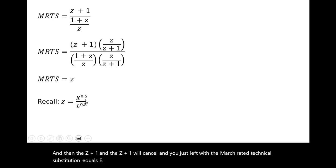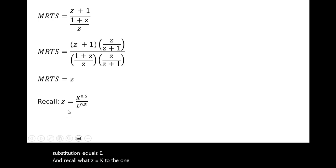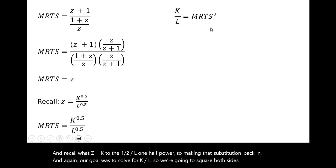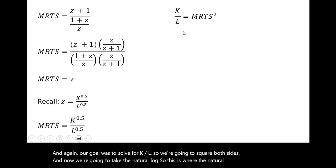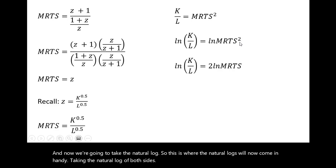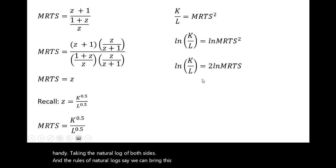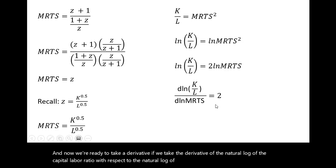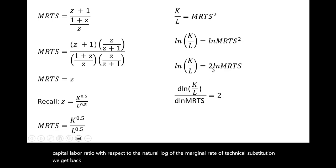And recall what z equals: k to the 1 half divided by l to the 1 half power, so making that substitution back in. And again, our goal was to solve for k divided by l, so we're going to square both sides. And now we're going to take the natural log of both sides. The rules of natural log say we can bring this 2 down in front. And now we're ready to take a derivative. If we take the derivative of the natural log of the capital labor ratio with respect to the natural log of the marginal rate of technical substitution, we get back 2 — simply the coefficient right here in this equation. And that is our elasticity of substitution.